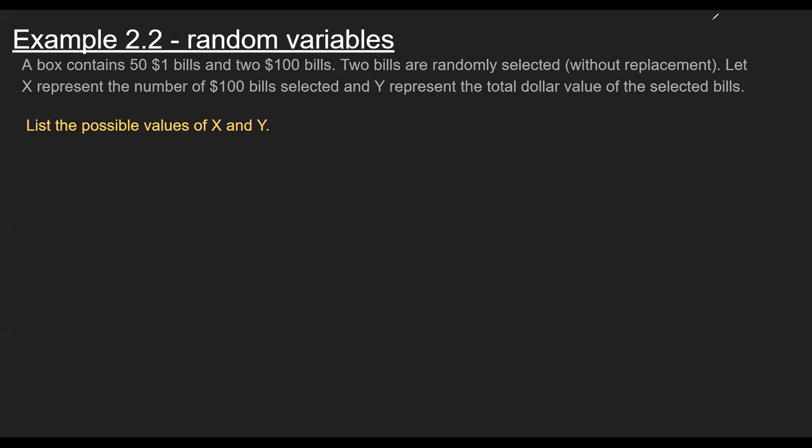In this example, we'll work through actually constructing a PDF and applying the rules we learned back from chapter 1 as well. So the scenario described here is I have a box that has 52 bills, 50 of them are $1 bills, two of them are $100 bills. The experiment is that we're going to select two bills at random. Now I've included that we're doing this without replacement, but keep in mind if the problem does not say without replacement, that is the default way that we select objects.